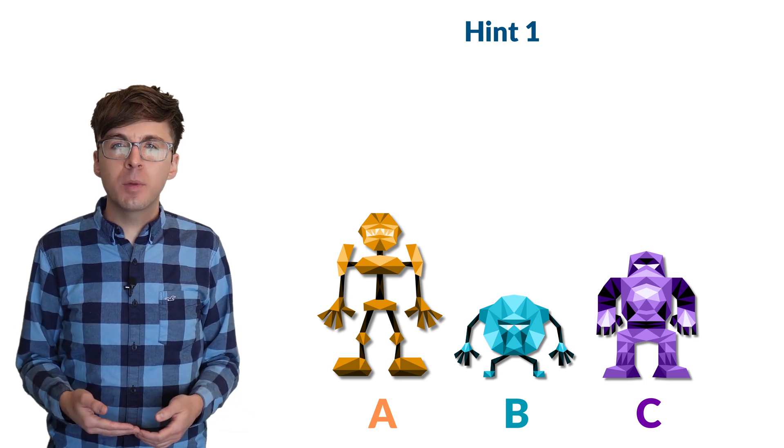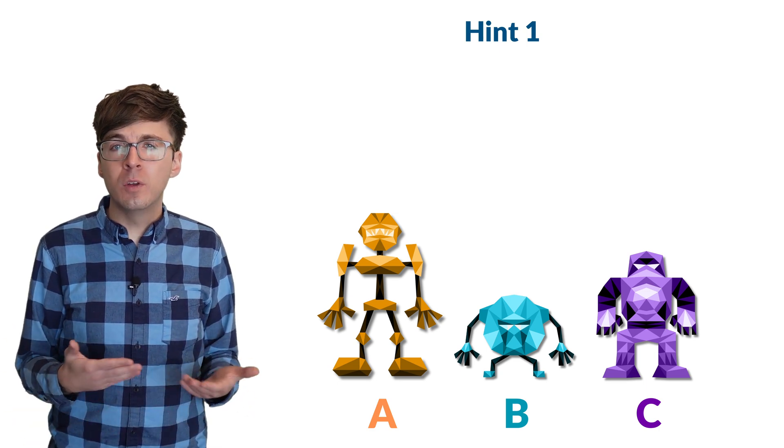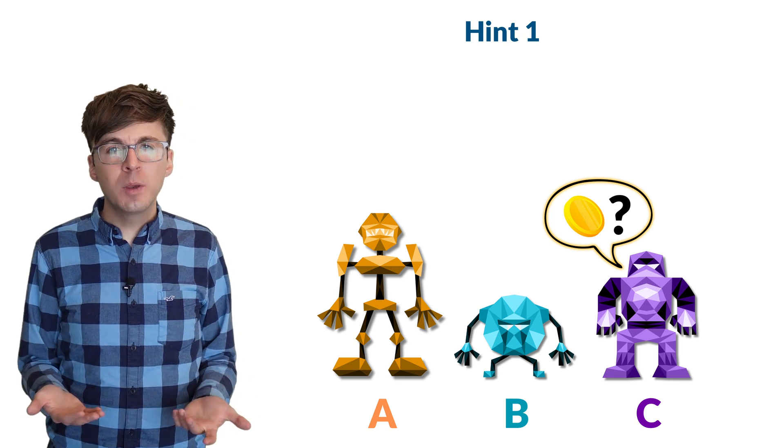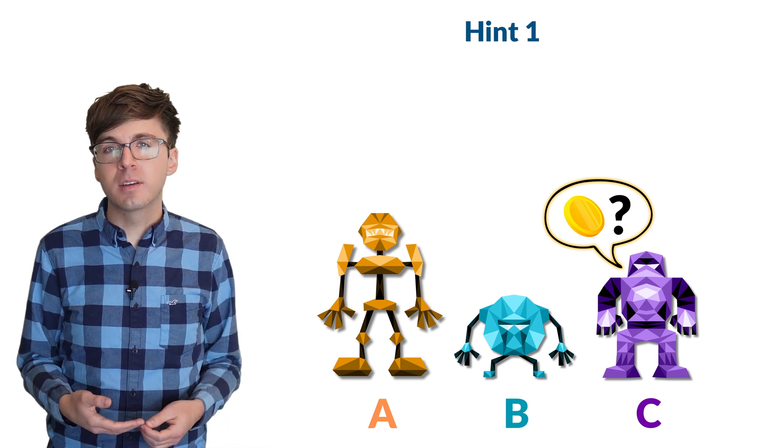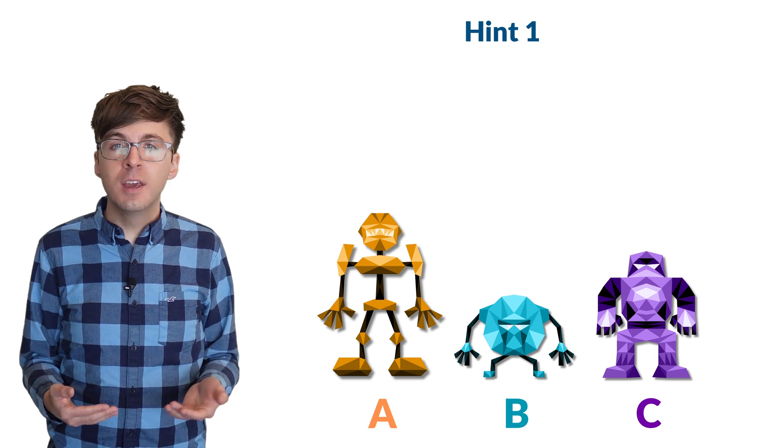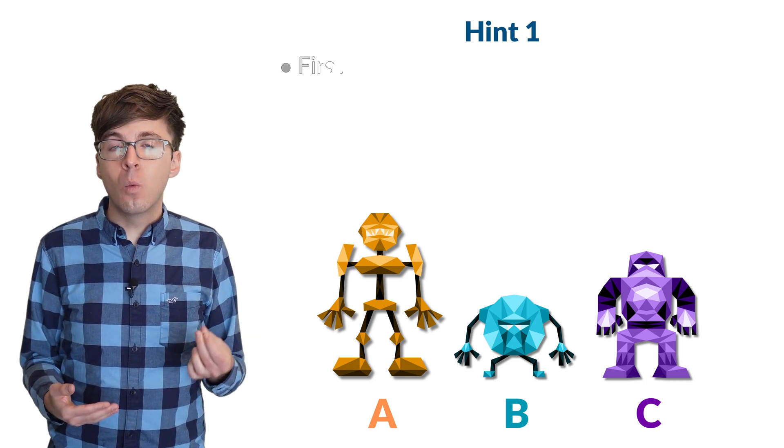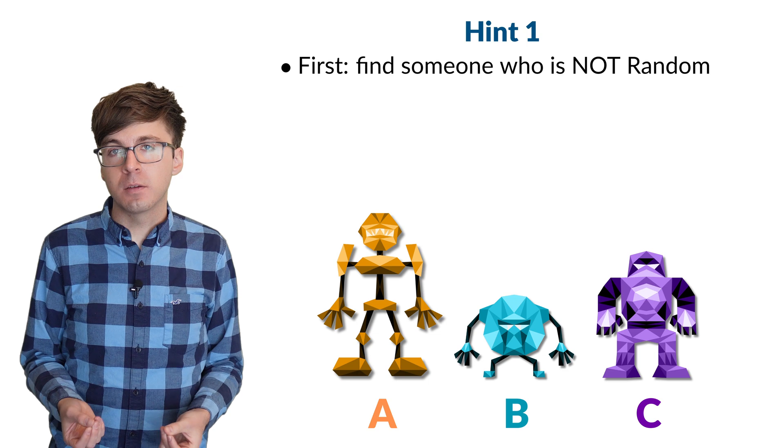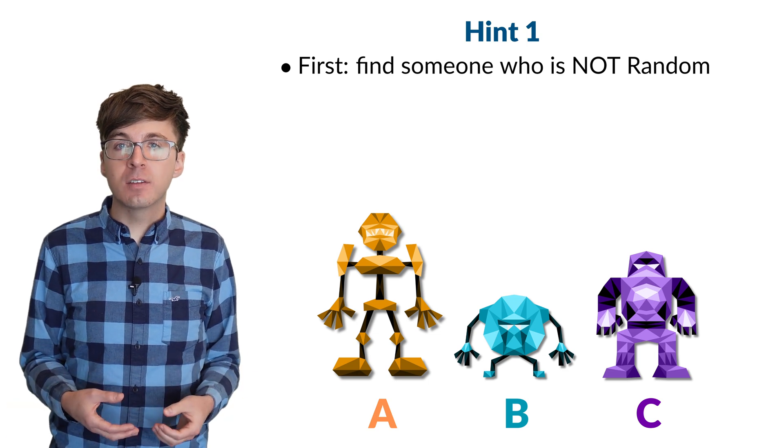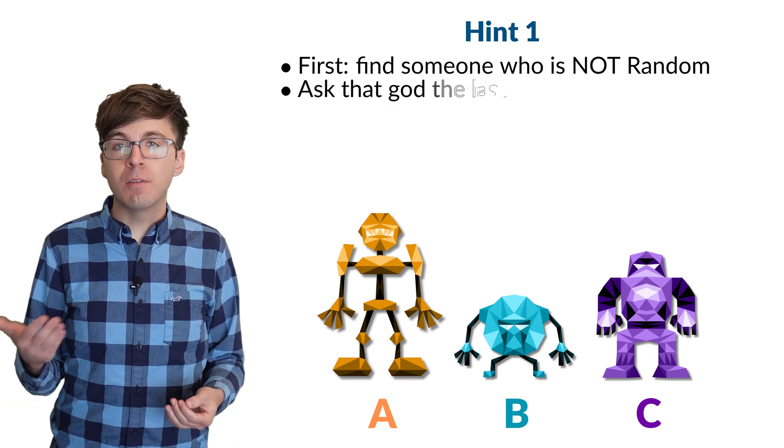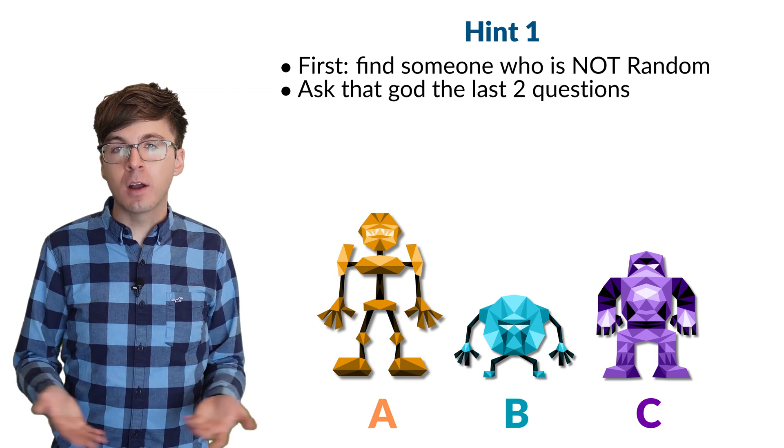Probably the toughest part of this puzzle is that we don't know who is random, making the answers we obtain very difficult to interpret. So the first step is to ask one question to identify for certain one god who is not random. Then after we've identified someone who is not random, we have two questions left to figure out who everyone is.